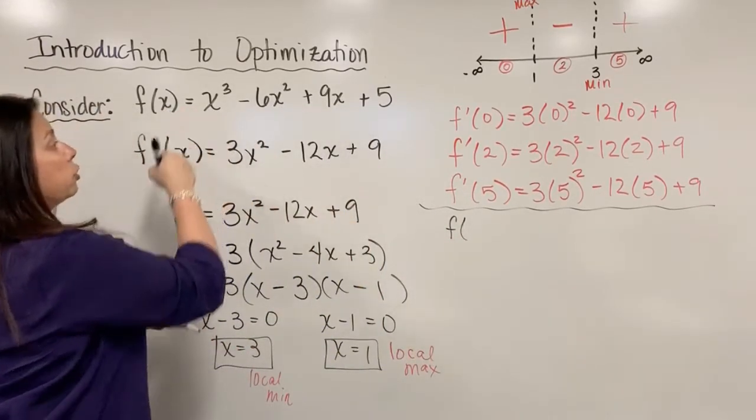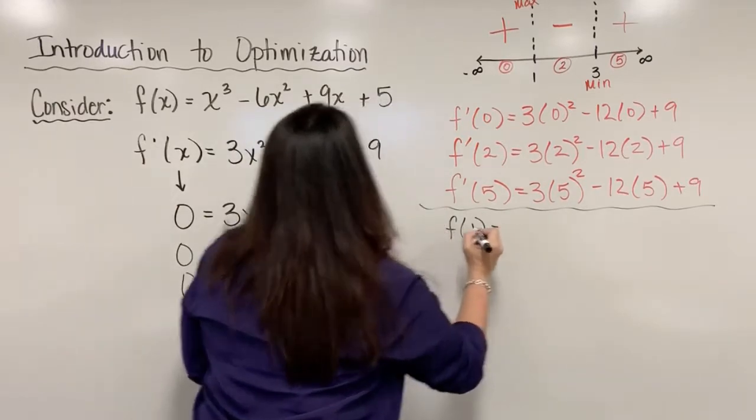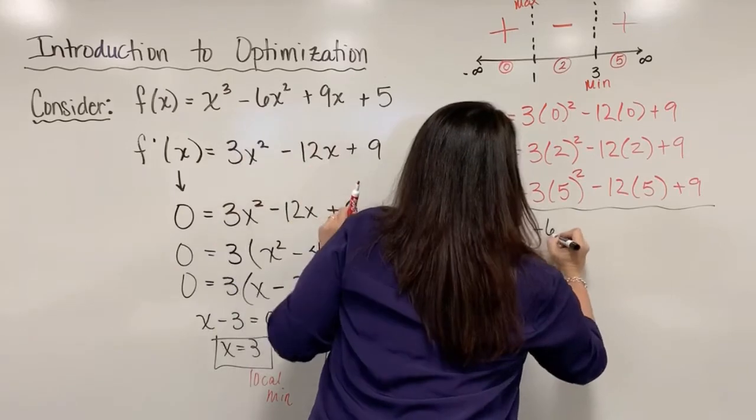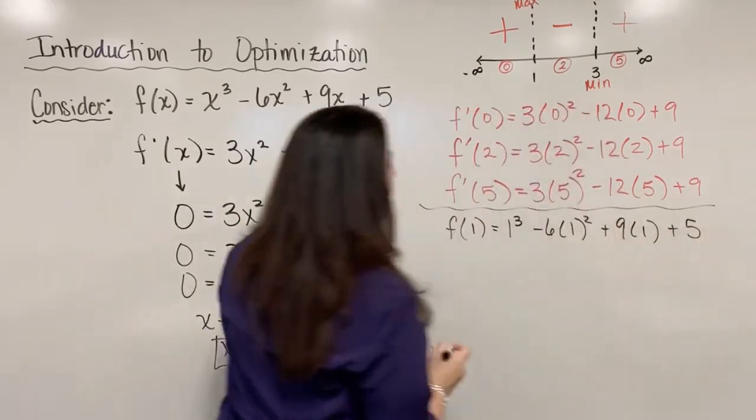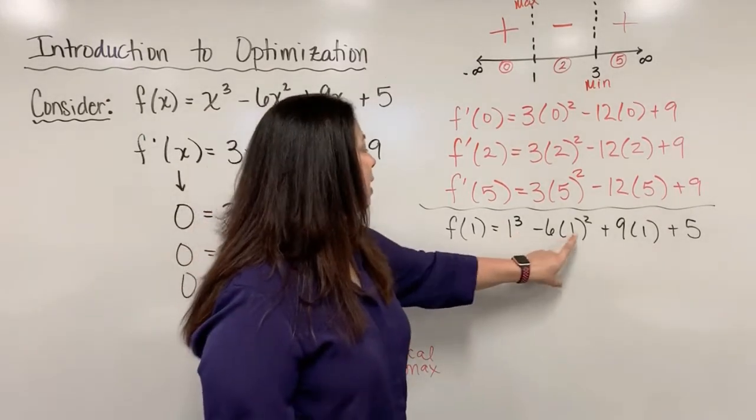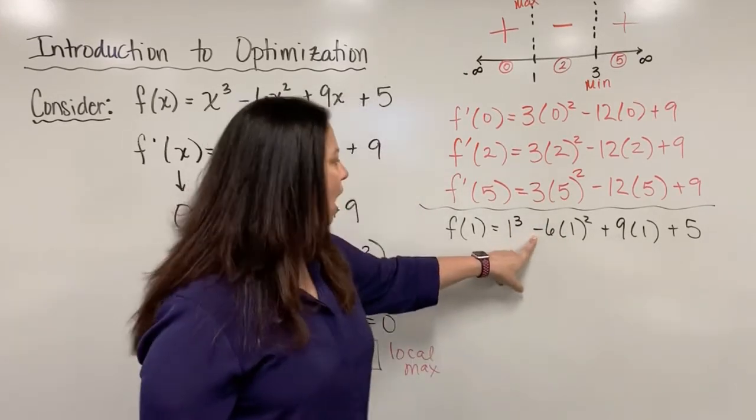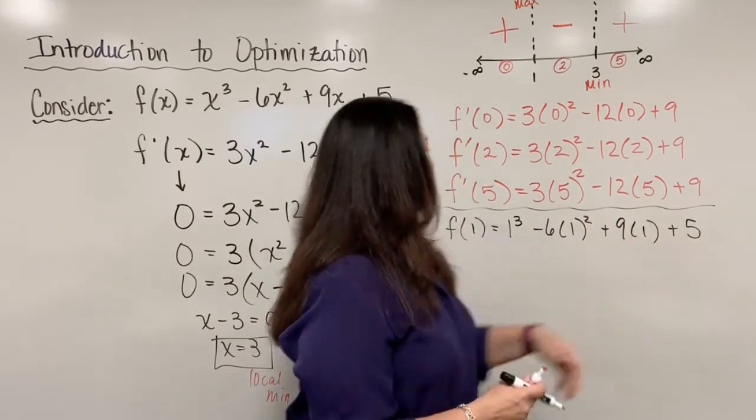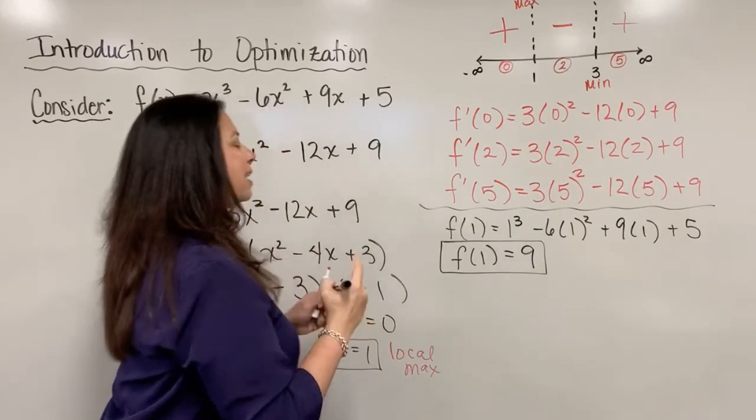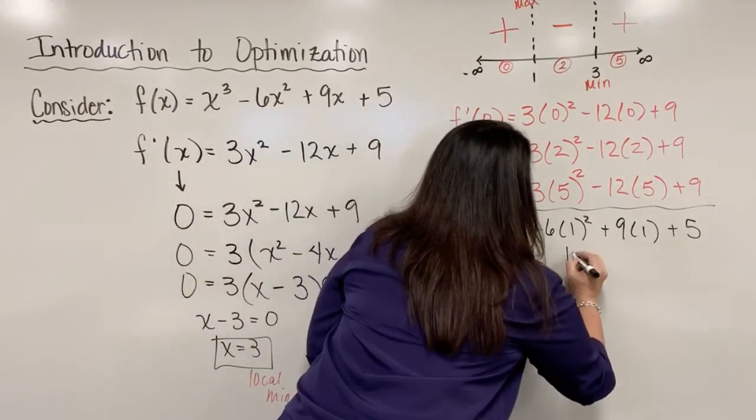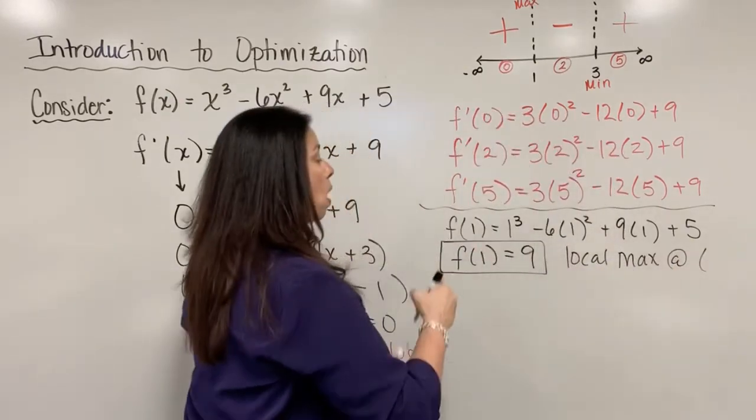So let's do that just so that we can have a complete point here. So in the first one, I'm going all the way back to the original function because I want to know what is the output value associated to that input value of 1. So I have f of 1 is equal to 1 cubed, and then minus 6 times 1 squared plus 9 times 1 plus 5. And when I simplify here, I'm going to have 1 cubed is just 1, 1 squared is just 1, but minus times negative 6. So I have 1 minus 6, so I have negative 5. But plus 9 plus 5, that gives me a total of just 9. So now I know if f of 1 equals 9, then I have a local max at specifically the point 1 comma 9.